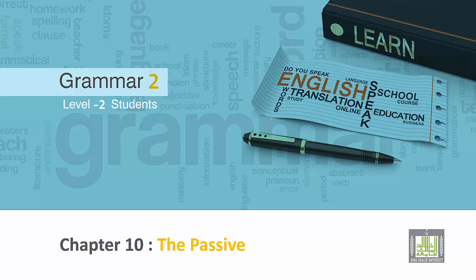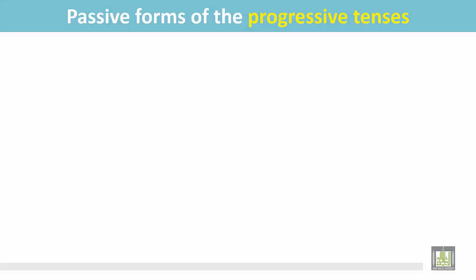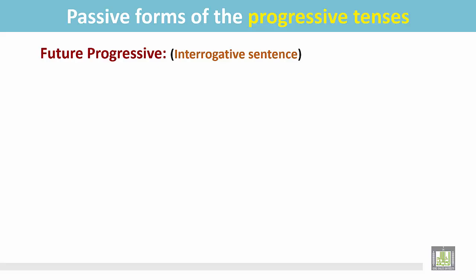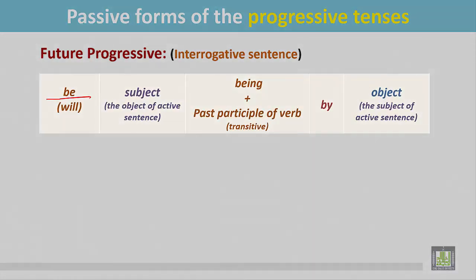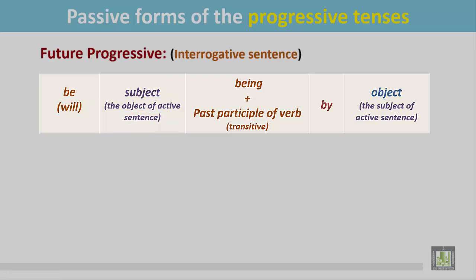Grammar 2 for level 2 students, chapter 10: the passive — passive forms of the progressive tenses, future progressive interrogative sentence. See the structure. The sentence begins with the be verb 'will', then the subject. The object of the active sentence becomes the subject in the passive. The past participle form of the transitive verb is followed by 'being', then the preposition 'by'.